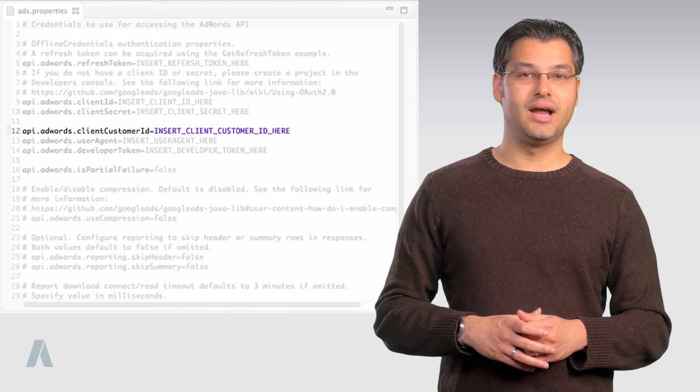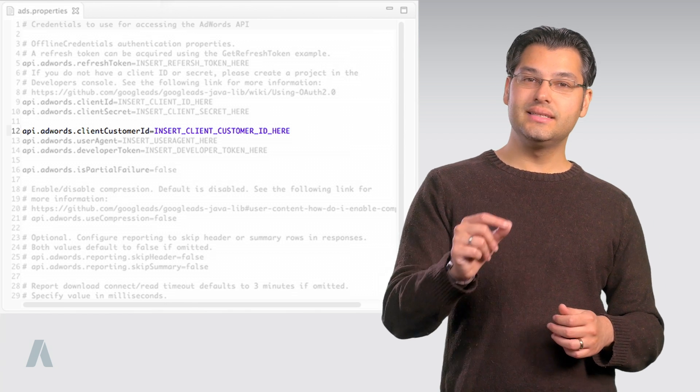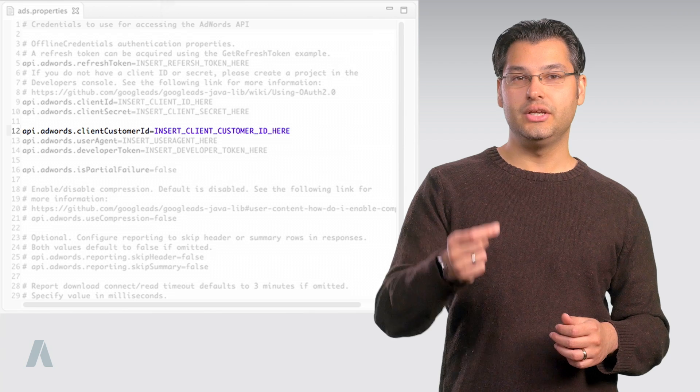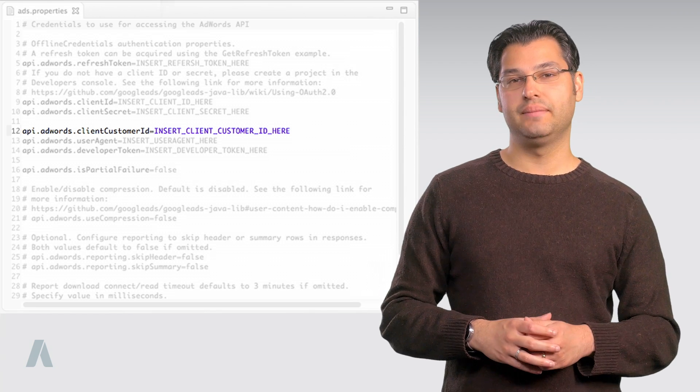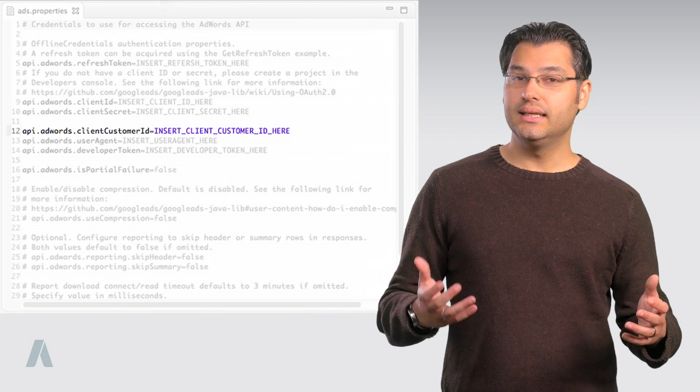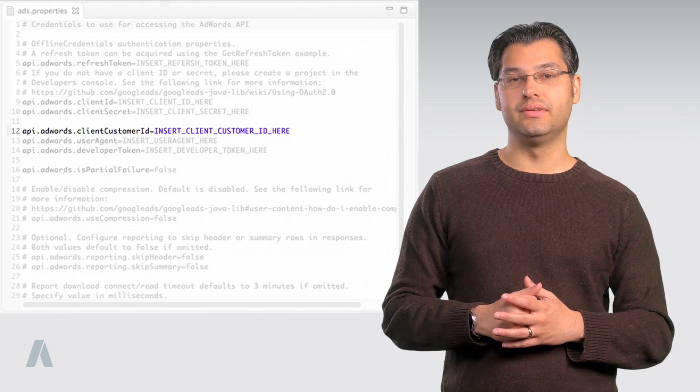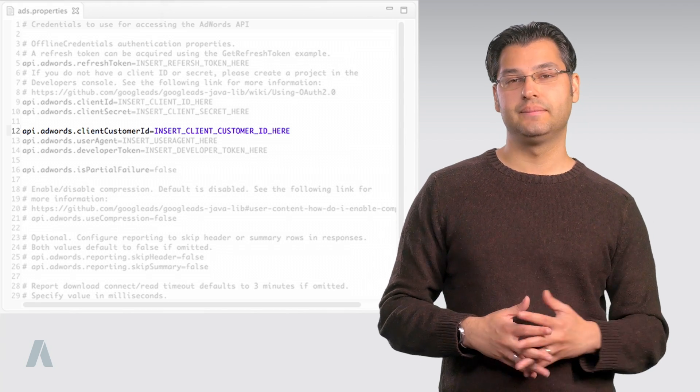Client Customer ID. This is the account number of the AdWords client account you want to manage via the API. Optionally, it can be left out of the ads.properties file and set programmatically. Once your developer token is approved, you can use a real client customer ID here and not just a test one.